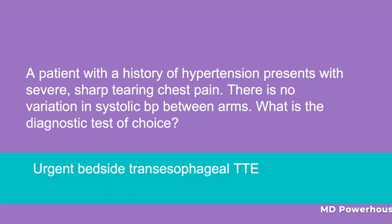The absence of blood pressure variation between arms does not rule out an aortic dissection. So the best next diagnostic test of choice is the urgent bedside TEE. Recall that risk factors for aortic dissection include hypertension, Marfan syndrome, and illicit drug use.